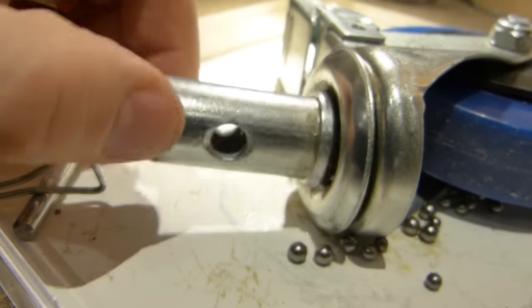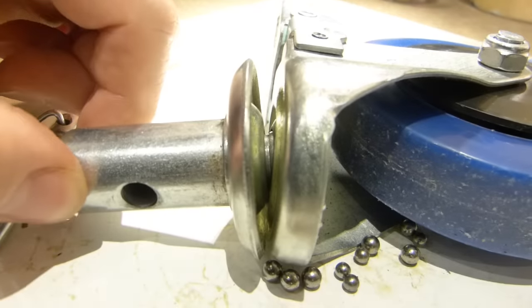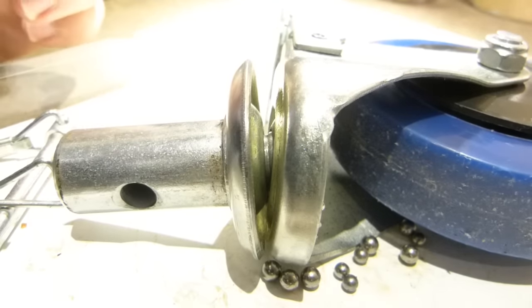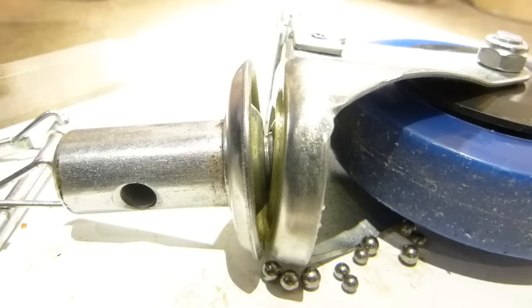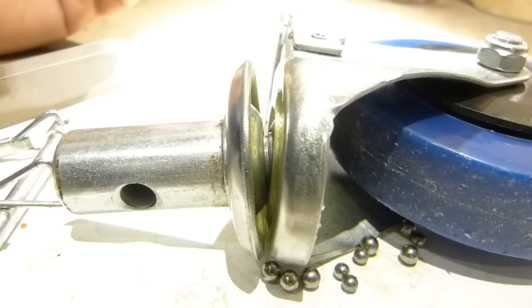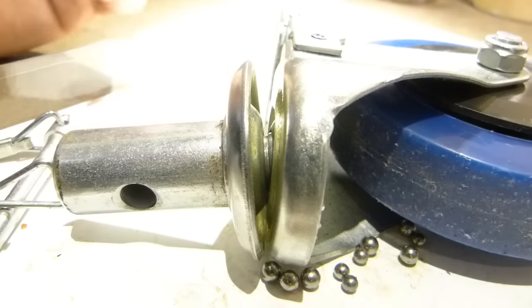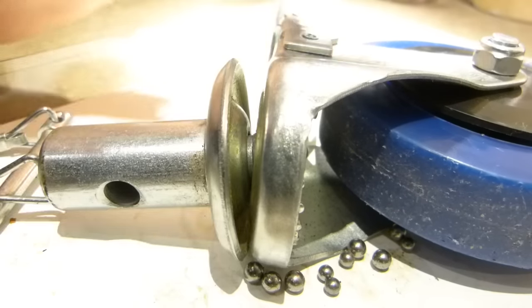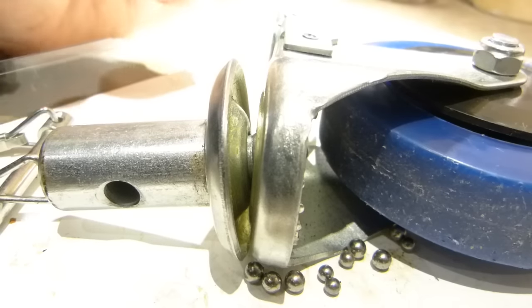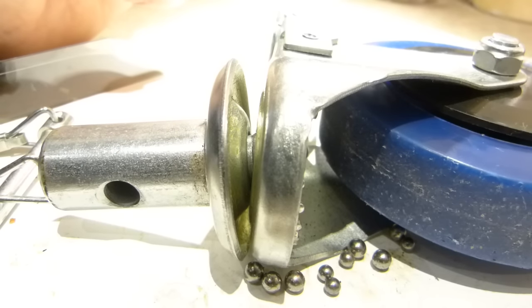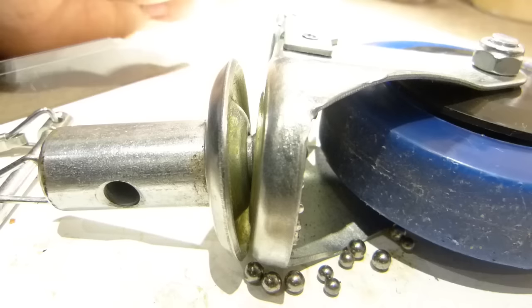So, whereas it looks big and strong on the outside, its functional, critical part, the diameter at the neck where the most amount of bending moment is generated and it needs to be the strongest, that's where it's the weakest and thinnest.